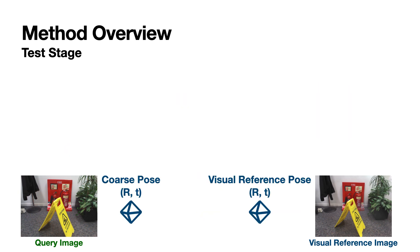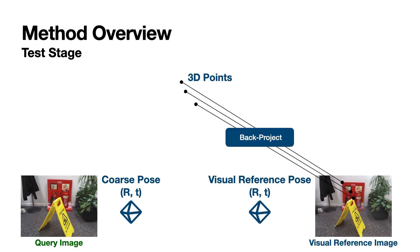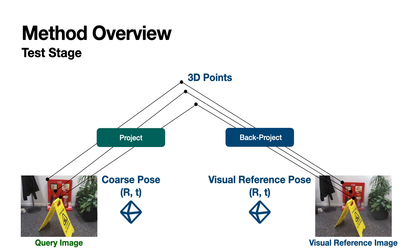Finally, we apply photometric warp loss optimization to refine the pose. We utilize the rendered depth to backproject all pixels from the visual reference image into 3D space, then project them onto the estimated pose. We sample the projected locations from the query image and minimize the photometric difference. This process results in a refined pose that ensures precise alignment between the rendered image and the input query image.